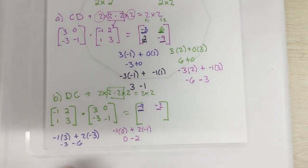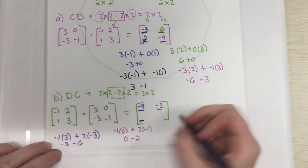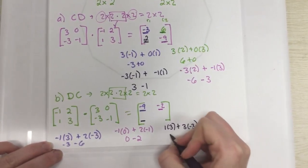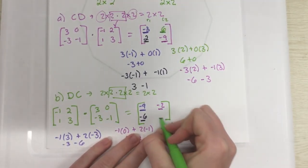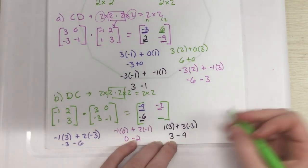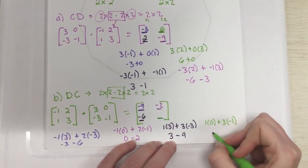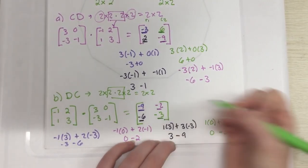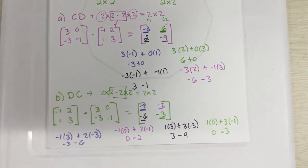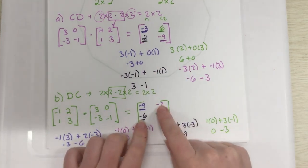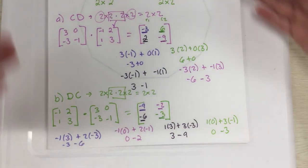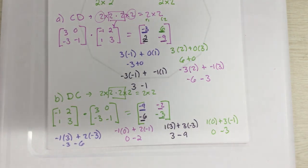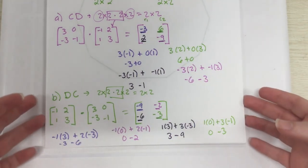For row one, column two: (-1)×0 + 1×(-1) = 0 - 2 = -2. For row two, column one: 1×3 + 3×(-3) = 3 - 9 = -6. And the last spot, row two, column two: 1×0 + 3×(-1) = 0 - 3 = -3. So D×C = [-9, -2; -6, -3]. Some of you might notice we got the same numbers but their elements are in a different order, and some turned positive versus negative. There is a pattern with that, but there's no point in memorizing it. This is how matrix multiplication works.